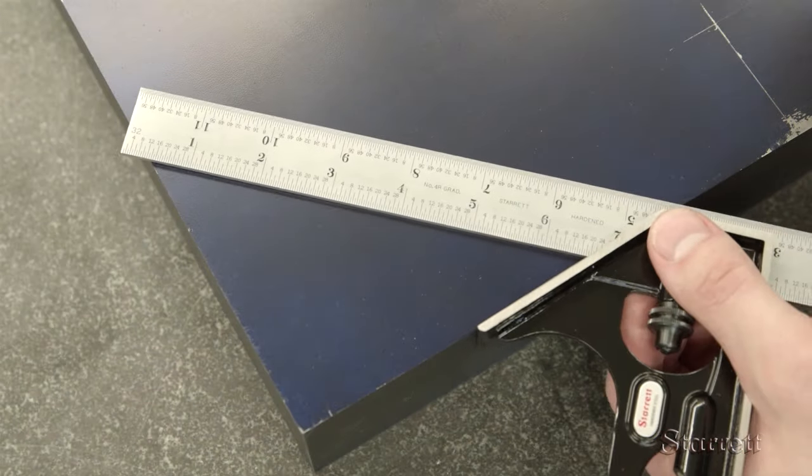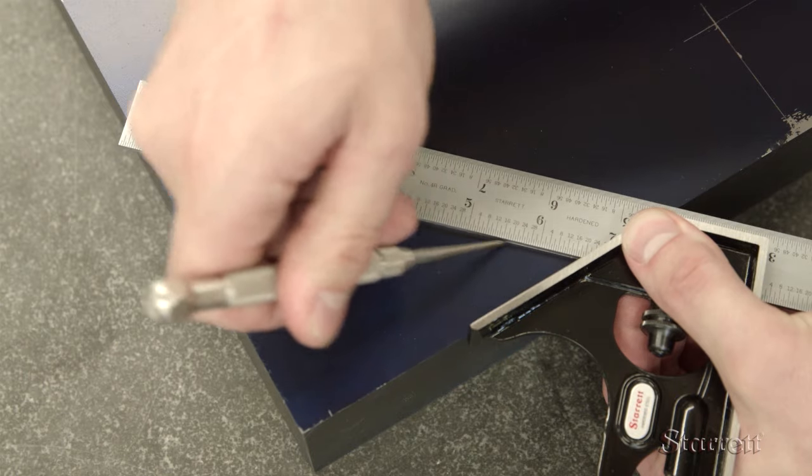Using the angled side of the head, you can scribe a line that is exactly 45 degrees from the edge.